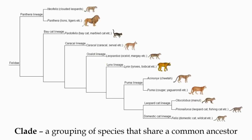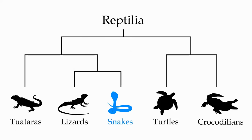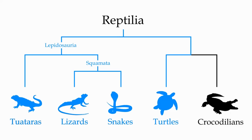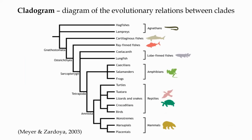A clade is a group of species that share a common ancestor, represented by a single branch of the tree of life along with any and all branches that stem from it. For example, snakes form a clade of reptiles, but also form part of a larger clade along with lizards, a group known as the squamates, and in turn, squamates can be grouped together with tuataras under the even larger clade Lepidosauria. However, Lepidosaurs and turtles do not form a single clade, because not all the descendants of the last common ancestor are included. This visual representation of the relatedness of different clades is called a cladogram, or phylogenetic tree.